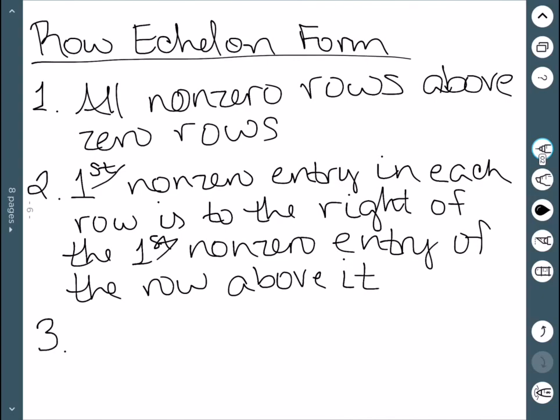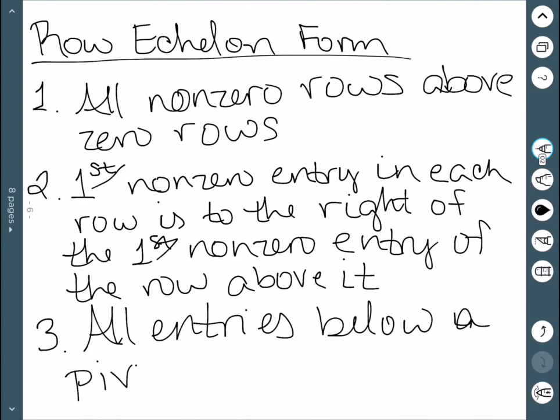And then the third condition: all entries below a pivot, which I'll define in a second, must be zero. So a pivot is this first non-zero entry in each row. So once I have the first non-zero entry in a row, everything below that should be a zero.